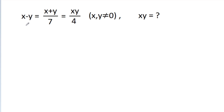In this video, we have given that x/y is equal to (x+y)/7 is equal to (x-y)/4, where x and y are not equal to 0. Then we have to find the value of xy.